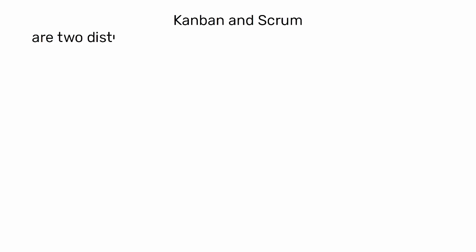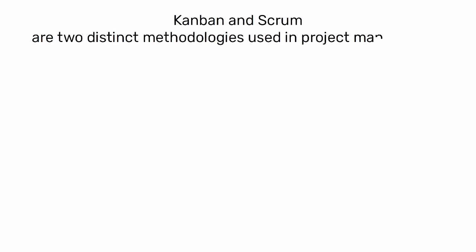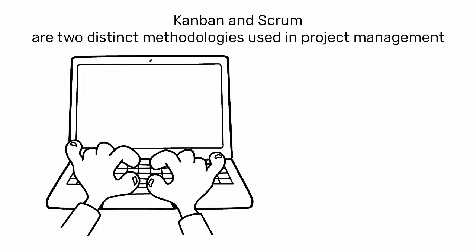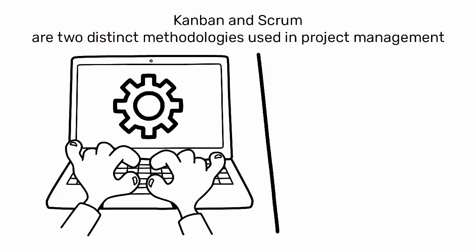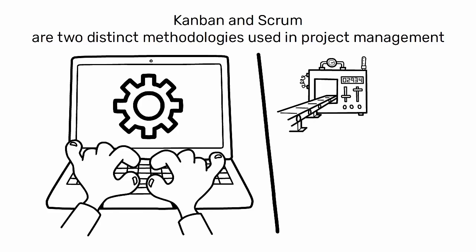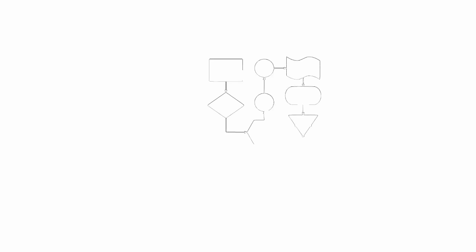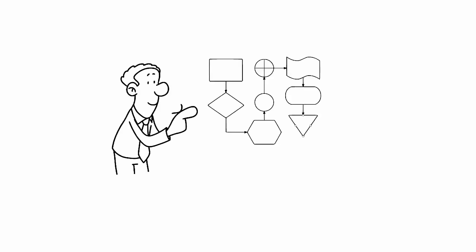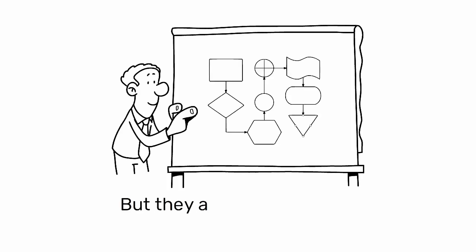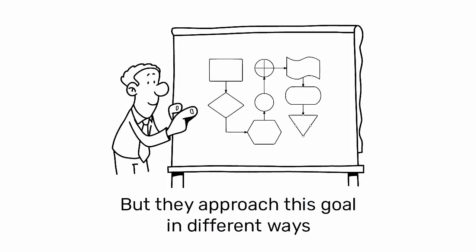Kanban and Scrum are two distinct methodologies used in project management, particularly in software development, but they can also be applied in industrial engineering contexts. Both aim to improve workflow efficiency, but they approach this goal in different ways.